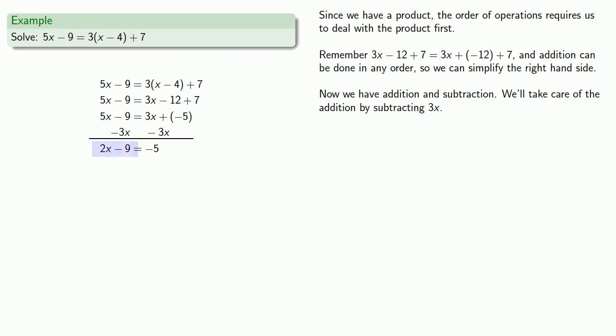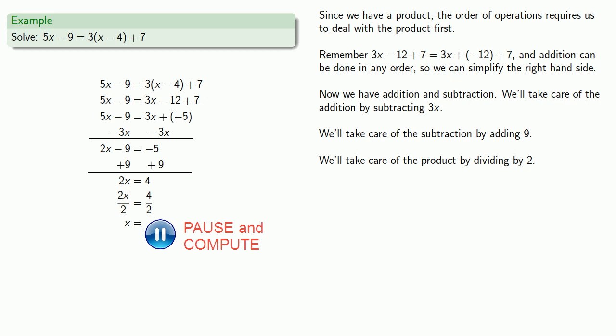Now over on the left-hand side, I have a difference. So I can take care of the subtraction by adding 9. Now we have 2x equals 4. That's a product times 2, so we'll take care of that by dividing by 2. And we get our solution x equals 2.